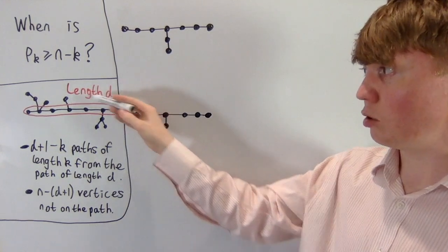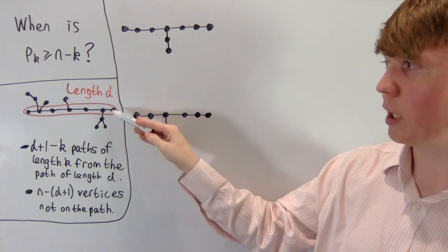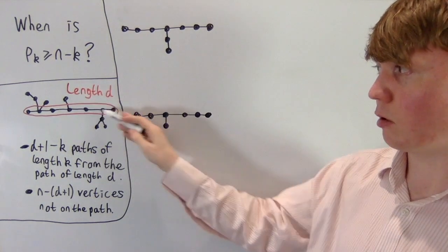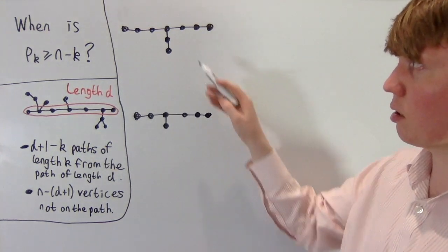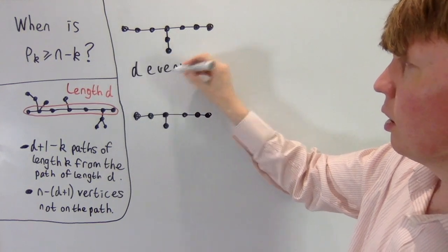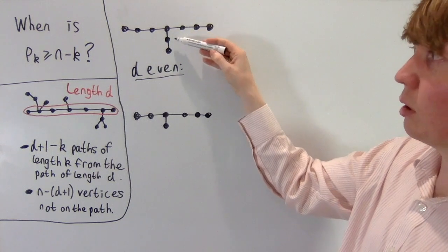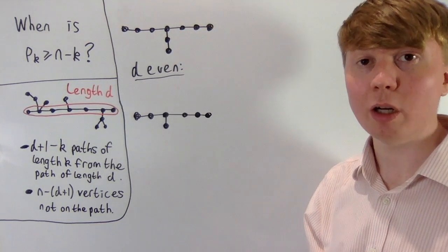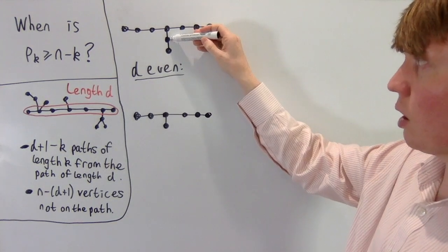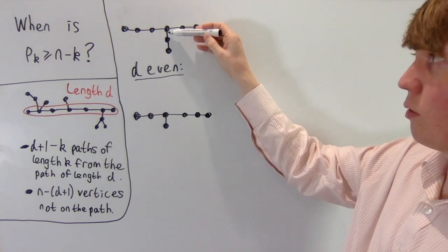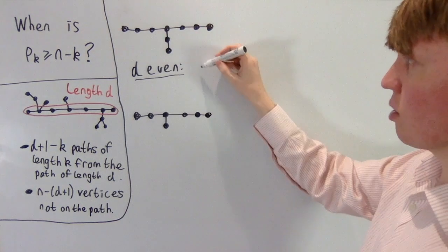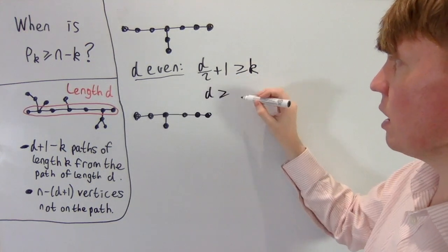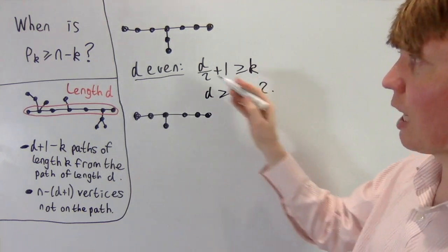The only problem is if d isn't large enough or k is too big, we might run out of path in the middle. Looking at the case where d is even: the worst-case scenario is joining at the centre, giving 1 extra edge plus d/2 edges, so d/2 + 1 must be ≥ k. This rearranges to d ≥ 2k−2 when d is even.